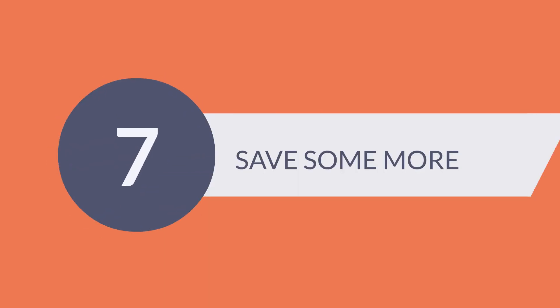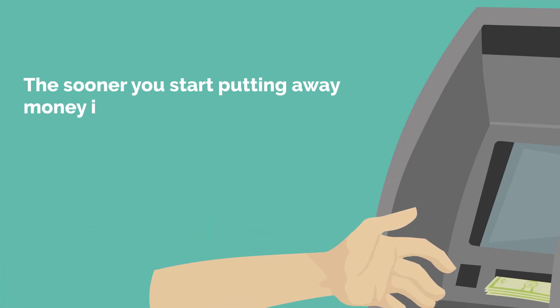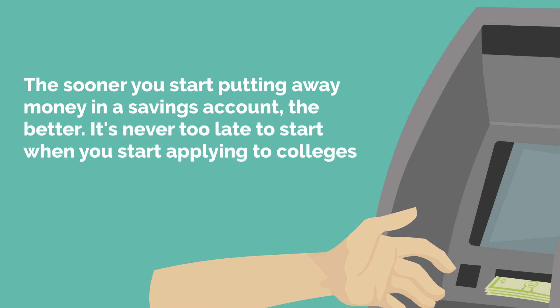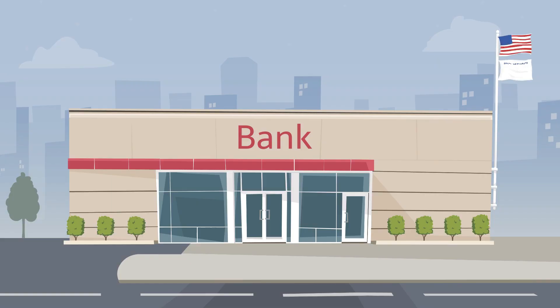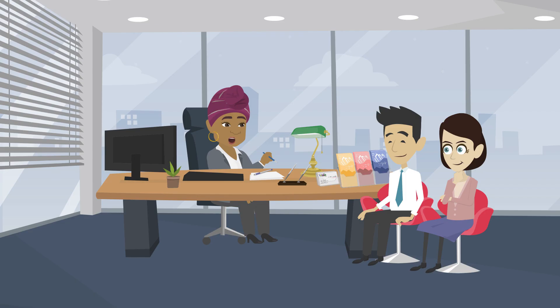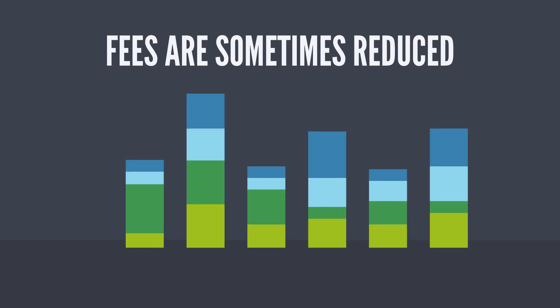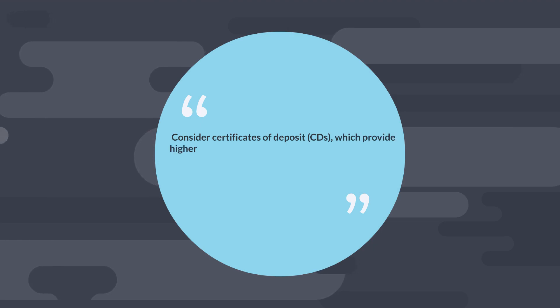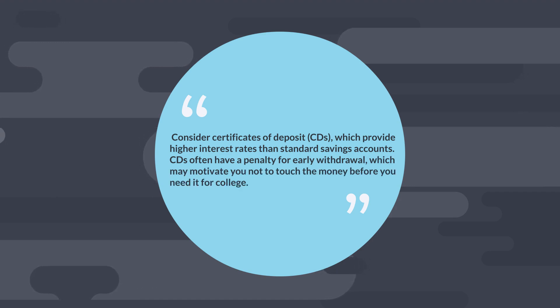7. Save Some More. The sooner you start putting away money in a savings account, the better. It's never too late to start when you start applying to colleges. Choosing a bank account designed exclusively for a college student might also help you save money because fees are sometimes reduced. Consider certificates of deposits, CDs, which provide higher interest rates than standard savings accounts. CDs often have a penalty for early withdrawal, which may motivate you not to touch the money before you need it for college.